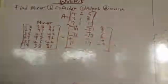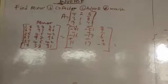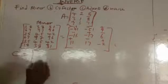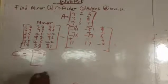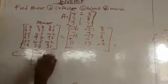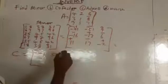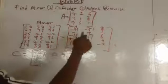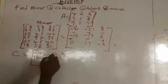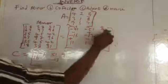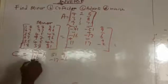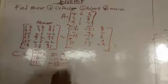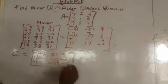So applying the signs to the minors for the cofactor: plus times minus gives minus 41; minus times minus gives plus 51; plus times plus gives 9; minus times minus gives 16; plus times minus gives minus 17; minus times plus gives minus 6; plus times plus gives 11; minus times plus gives minus 17; and plus times minus gives minus 2.